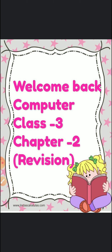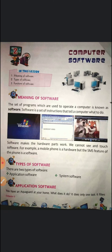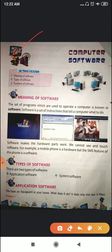All of you, please take out your books and open page number 13. So here it is, chapter number 2 and the name of the chapter is computer software. In this chapter, we are going to revise the meaning of software, types of software, and functions of software.